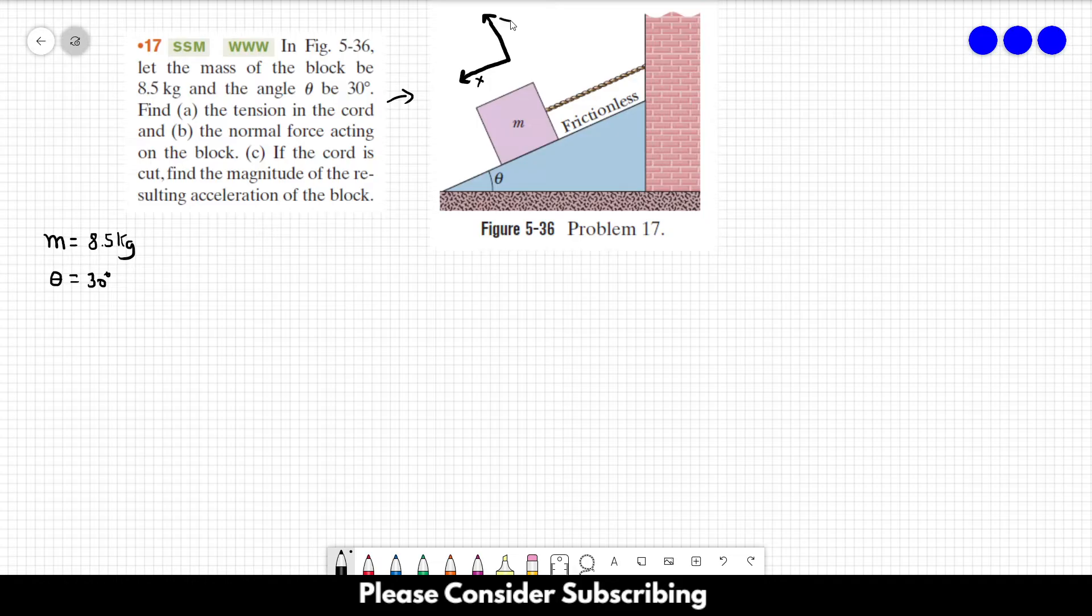Now we have to draw the forces that act on the block. We have first the gravitational force, let's call it FG. We have the force from the string, which we will call T, and the normal force, which is always perpendicular to the surface of contact, we'll call it N.